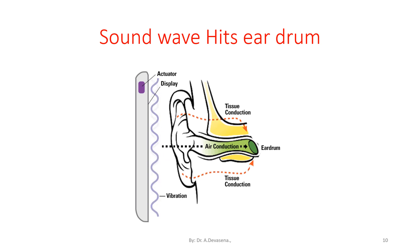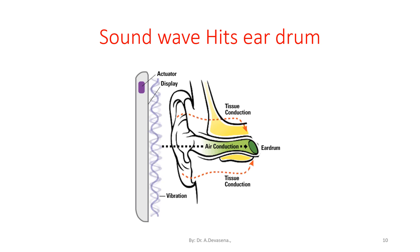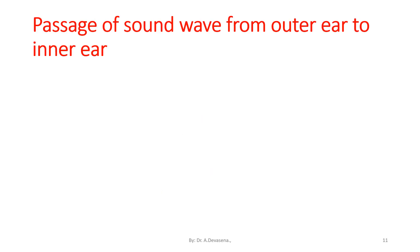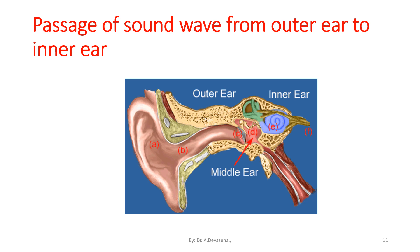A vibration is created and passed to the human ear through tissue conduction and air conduction, where it hits the eardrum. The sound wave passes from the outside of the human ear through the canal, then through the middle ear, and is then passed to the inner ear. From the inner ear, it is passed to the human brain through the auditory nerves.